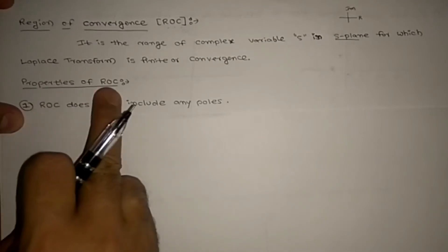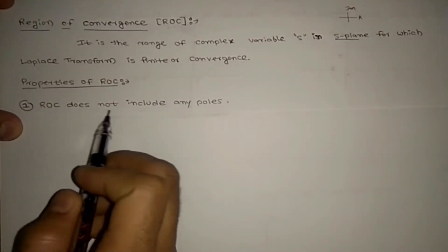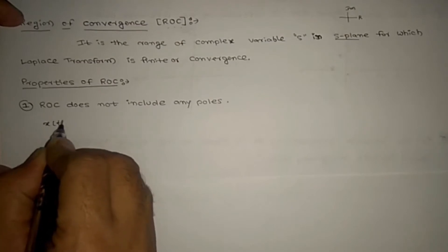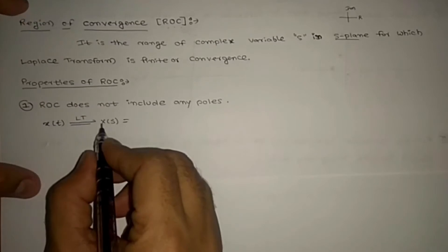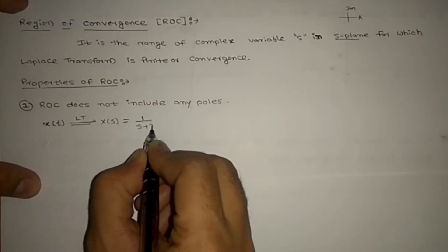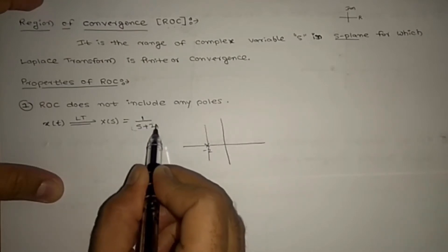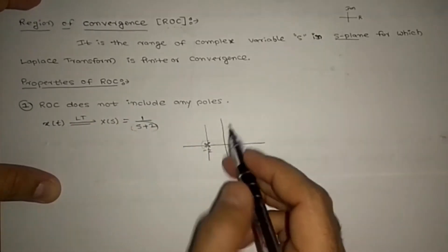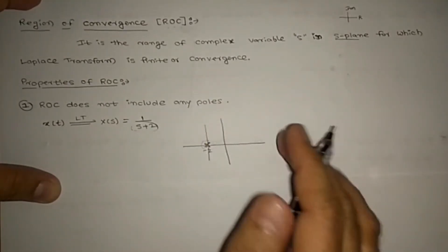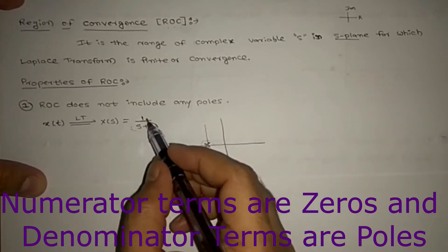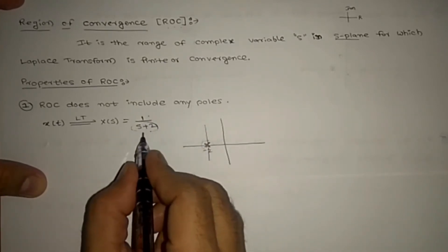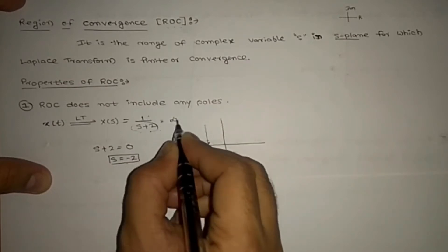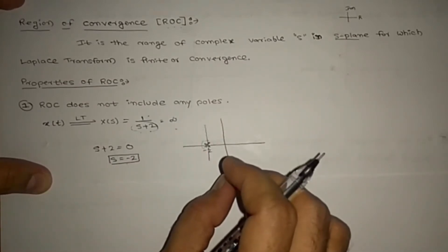Let us see the properties of ROC. The first property: ROC does not include any poles. Suppose x(t) has a Laplace transform X(s). If X(s) has a factor like (s+2), then s = -2 is a pole. At s = -2, X(s) goes to infinity — it will not exist. That is why the ROC does not include any poles; it should be either to one side or the other, but not at the pole itself.